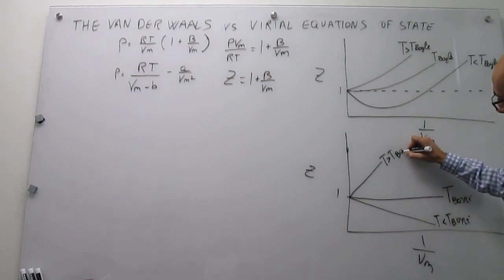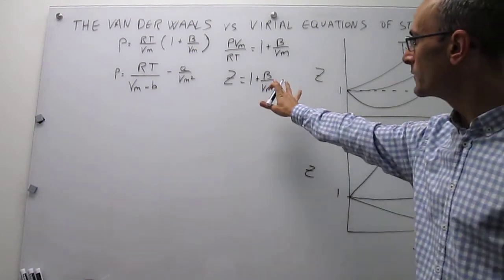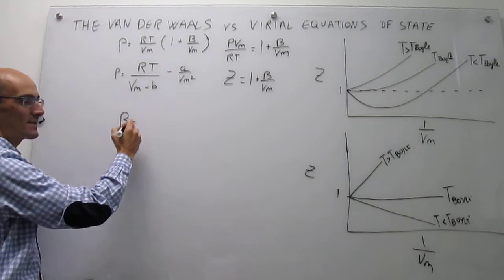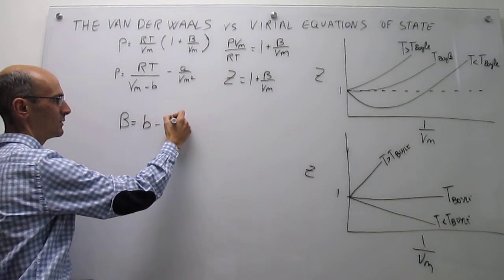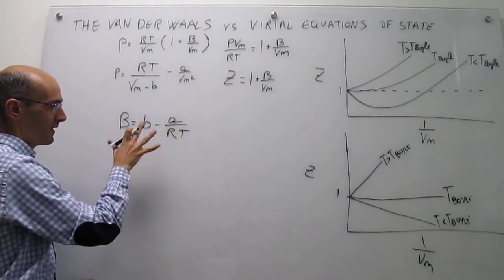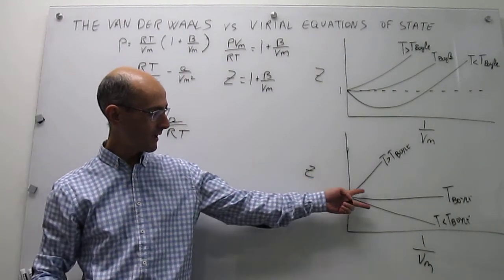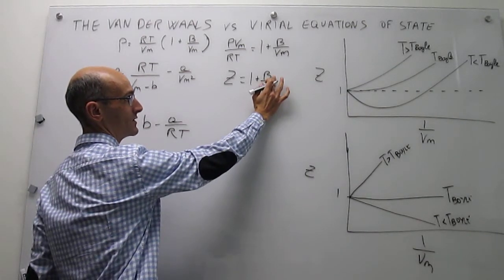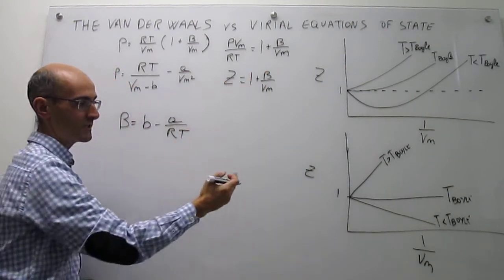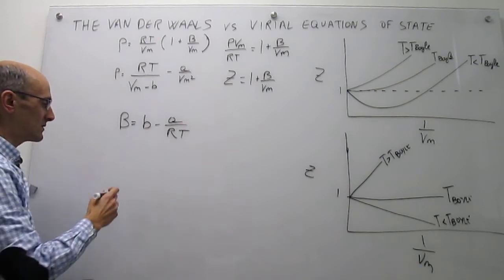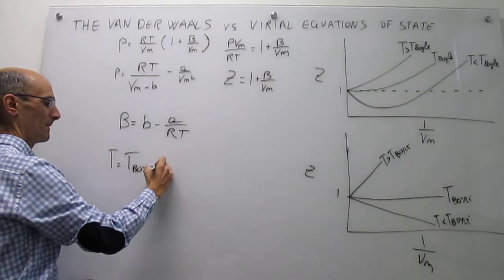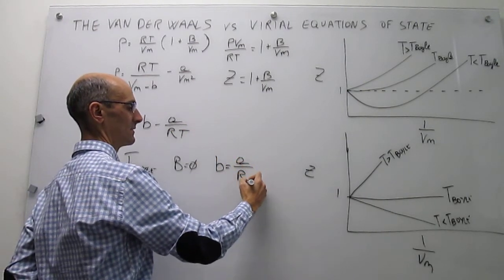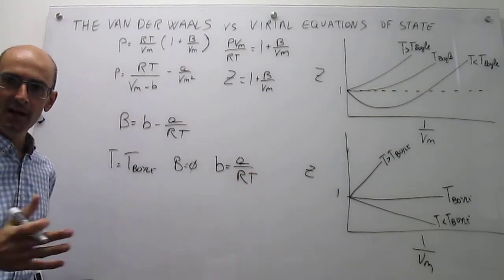We can examine how these limits arise from the values of the Virial and van der Waals constants. From a prior video, we know there is a relationship between the second Virial coefficient B and the van der Waals coefficients. At the Boyle temperature, the coefficient B must equal zero, so that Z equals one as a function of inverse molar volume — meaning attractions and repulsions are perfectly balanced.